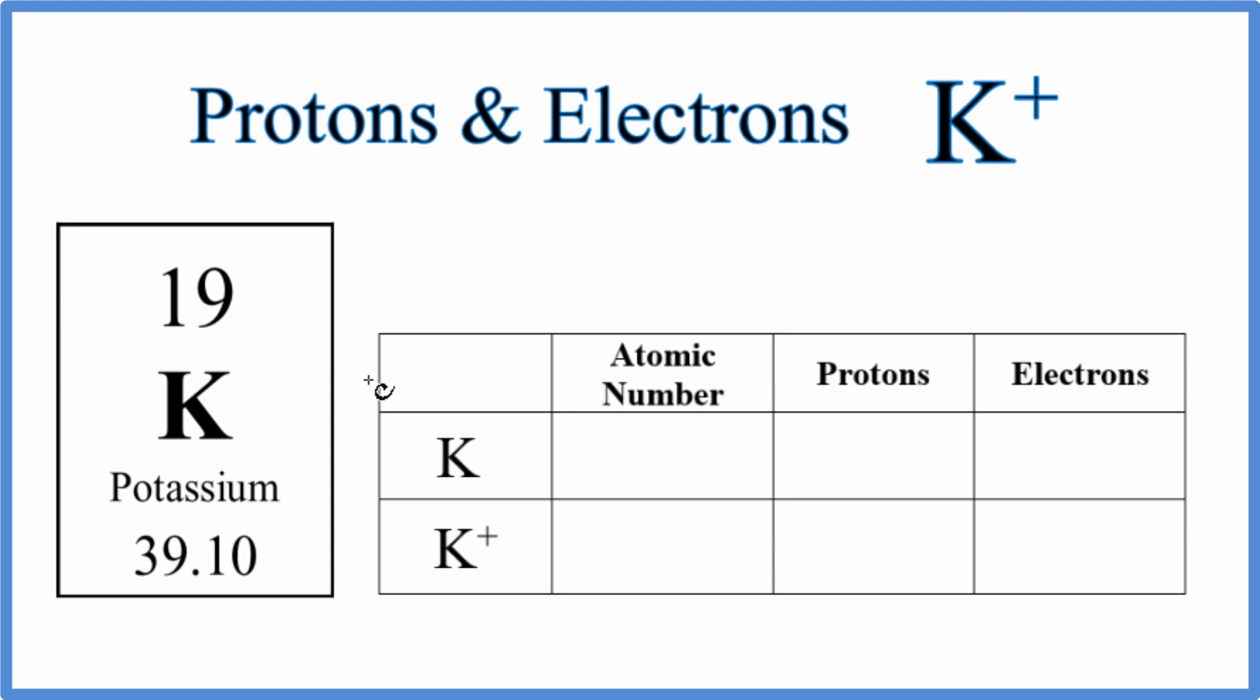When we look on the periodic table, we find potassium here. This 19, it's the atomic number. So the atomic number for potassium, that's 19.